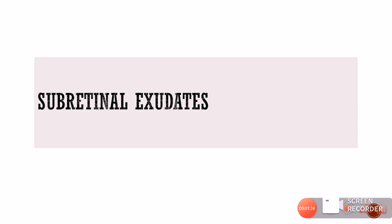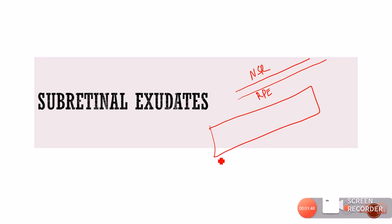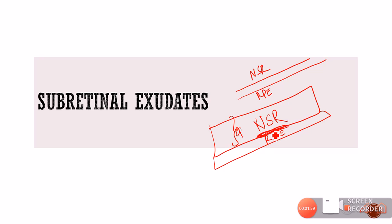Now let us discuss sub-retinal exudates. Hard exudates are mostly in the outer plexiform layer, but sub-retinal exudates are lipoprotenaceous material present below the neurosensory retina — between the neurosensory retina and the RPE. The space between these two layers is the sub-retinal space, and collection of exudates there is called sub-retinal exudates.